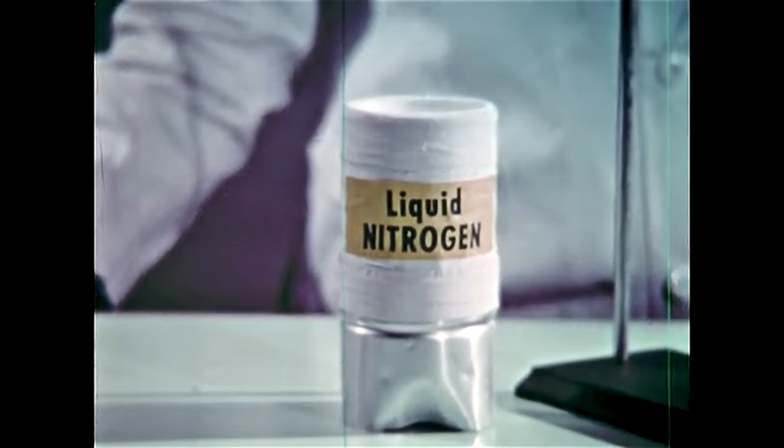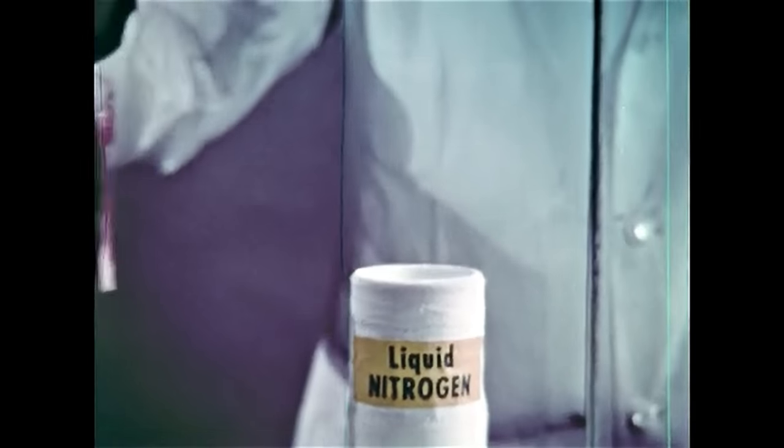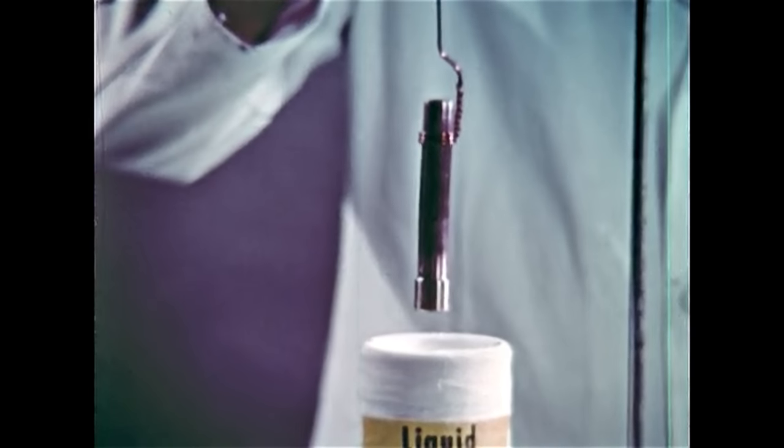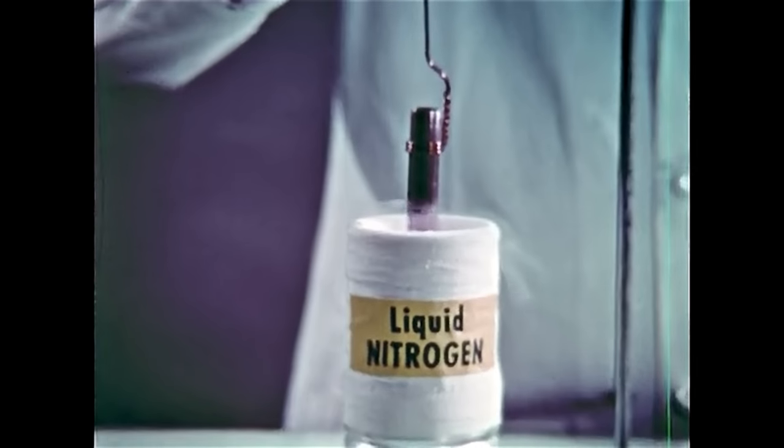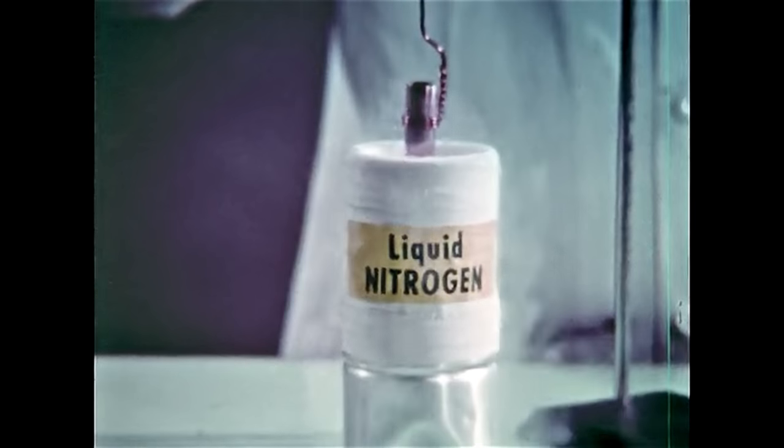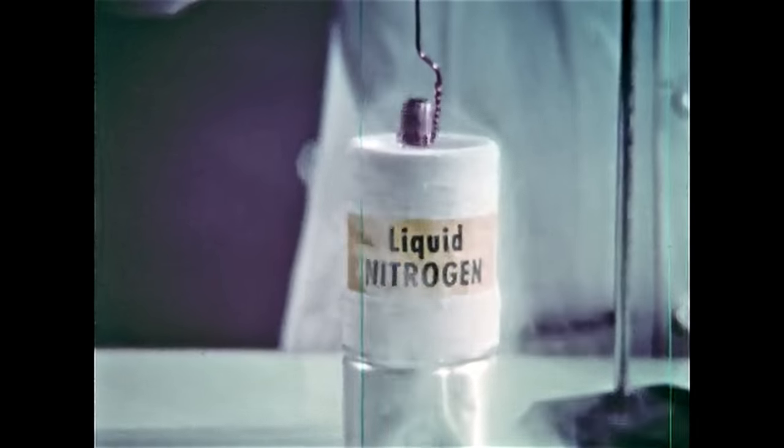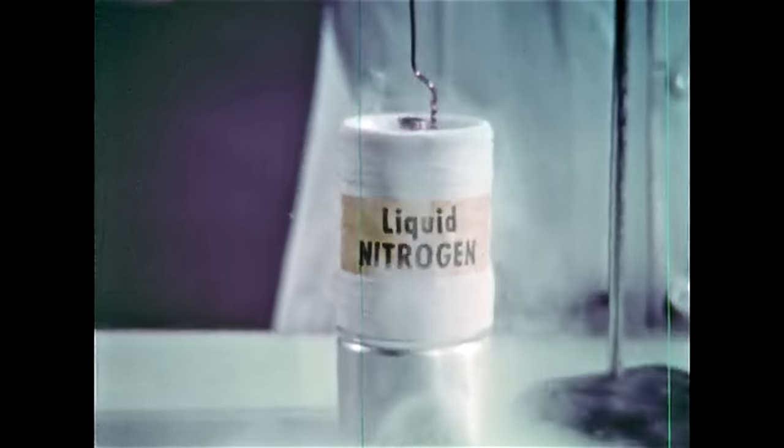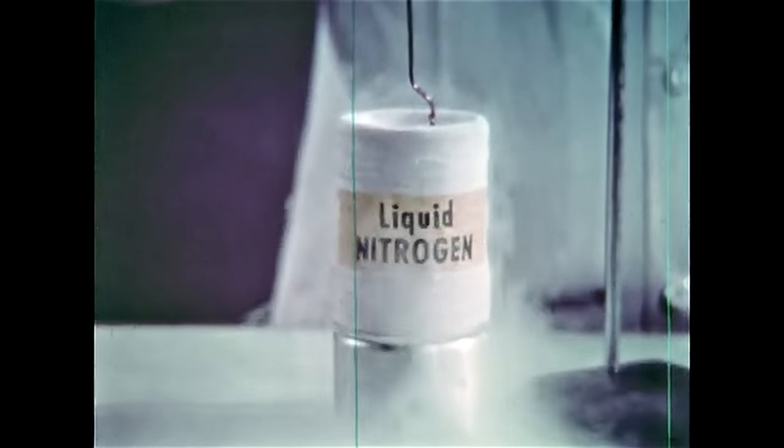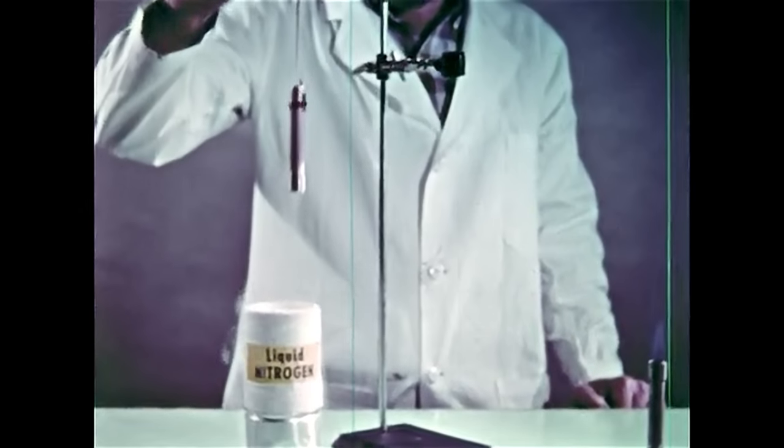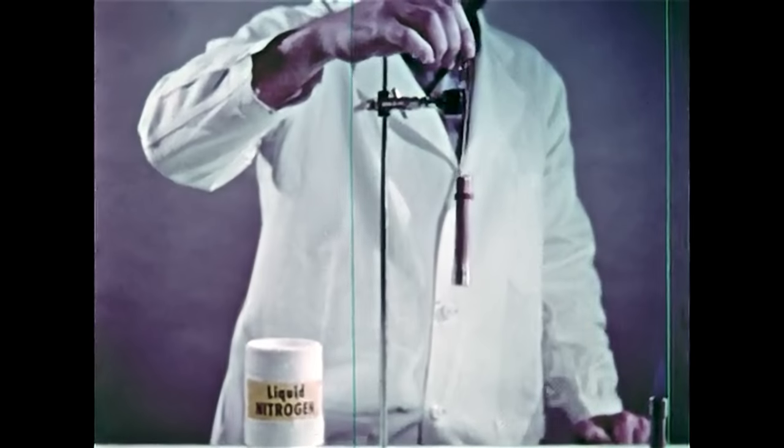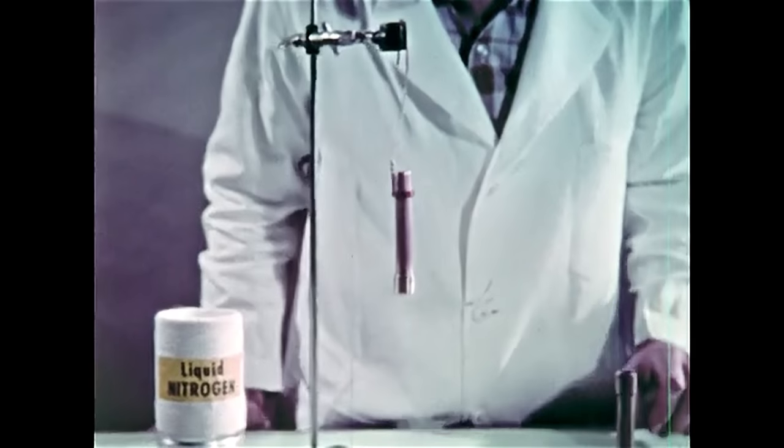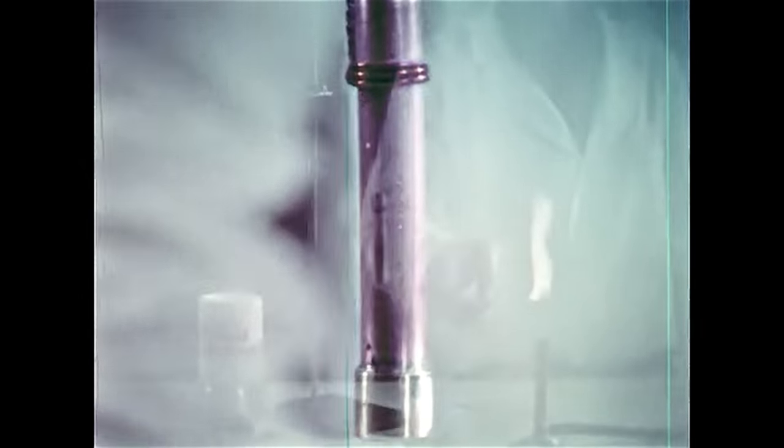This time we're using liquid nitrogen as a refrigerant for this hollow copper tube which we'll fill to bring its temperature below the boiling point of oxygen. The nitrogen is spitting and boiling over as we cool the copper tube down to the temperature of the very cold liquid nitrogen. When the copper tube is hung in the air, its low temperature makes the oxygen condense out of the air on its sides and run down in liquid form.